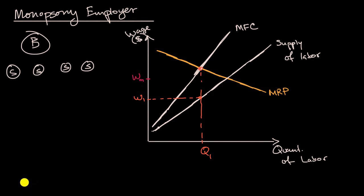Pause the video and think about what would then happen. What would the marginal factor cost curve look like? And then what would be the rational quantity for the firm to hire?